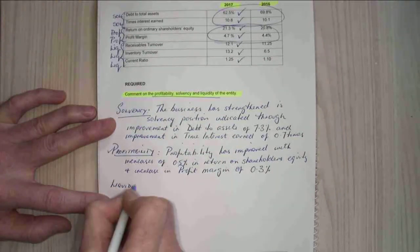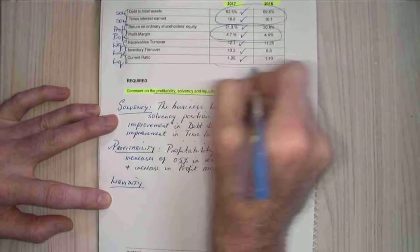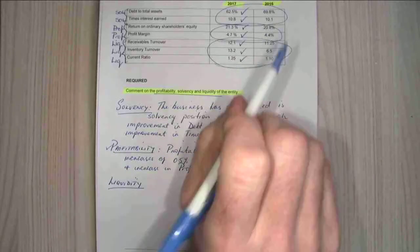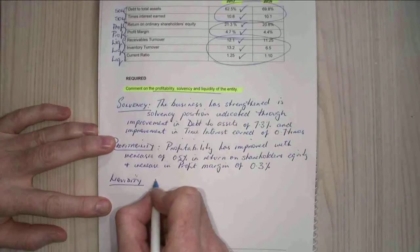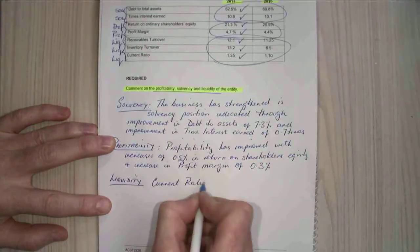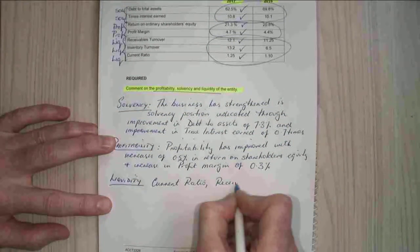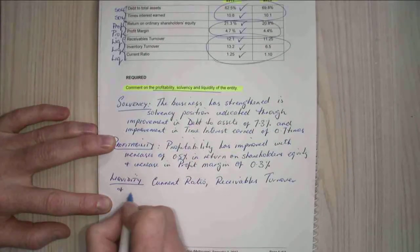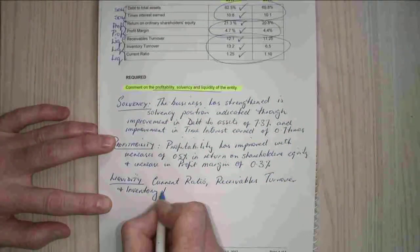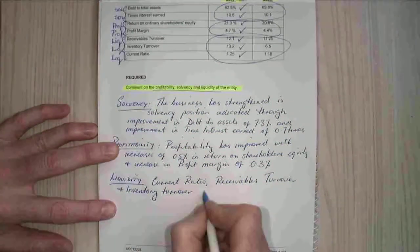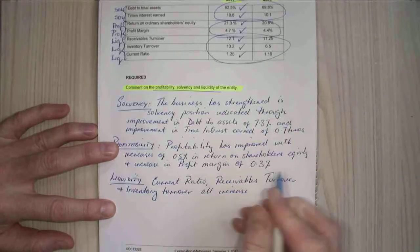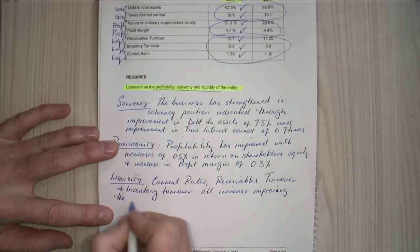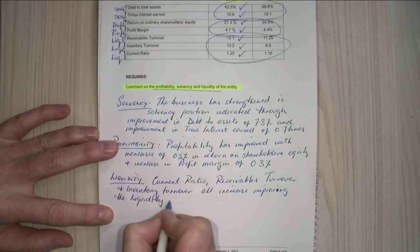Liquidity. So my liquidity, I've got receivables turnover increased, my inventory turnover increased, and my current ratio has increased. All increased, improving the liquidity of the business.